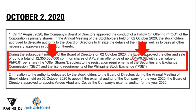Furthermore, in that October 2, 2020 meeting, they already stated the FOO price and the additional shares to be added. During the subsequent meeting of the board of directors on October 2, 2020, the board approved the offer and sale of up to a total of 12.3 billion common shares of APL at an offer price of 0.08 pesos with a par value of 0.01 pesos per share, subject to the registration requirements of the SEC and the listing requirements of the PSE. So on October 2, 2020, they already stated the possible FOO price of 0.08 pesos and the additional 12.3 billion new shares. When a company adds additional shares to its existing outstanding shares, that is called a dilutive follow-on offering, though if the shares added are small compared to outstanding shares, the effect is negligible.